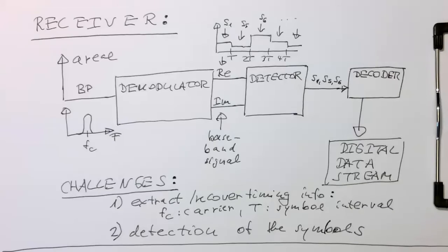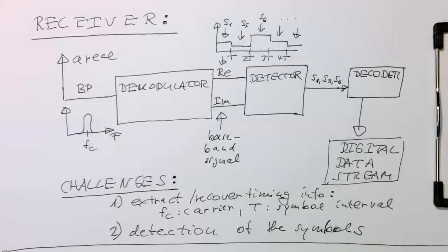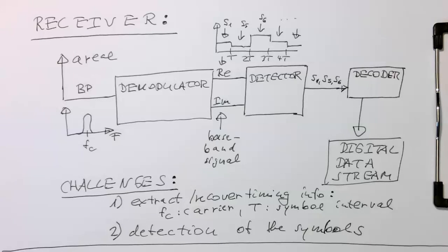So there are obviously many more challenges on the receiver side, but in general these are the main challenges that we need to extract and recover timing information and we need to detect the symbols in reliable way.